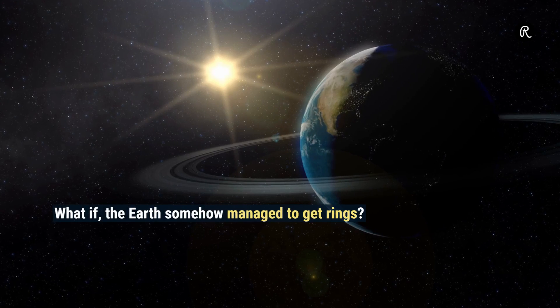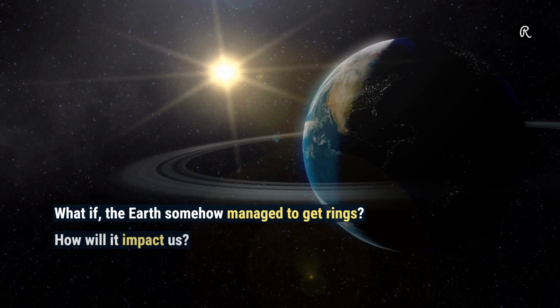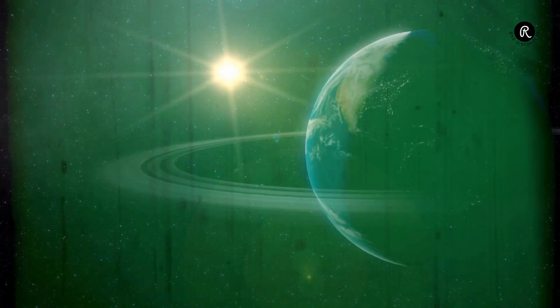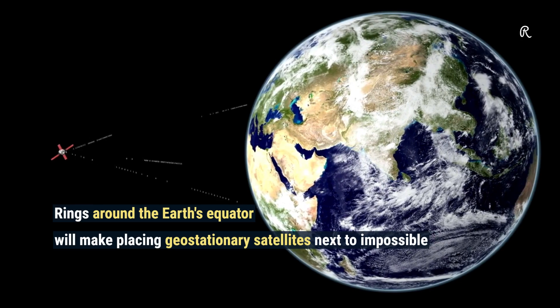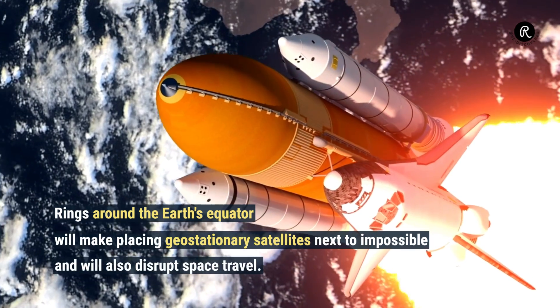What if the Earth somehow managed to get rings? How will it impact us? Rings around the Earth's equator would make placing geostationary satellites next to impossible and will also disrupt space travel.